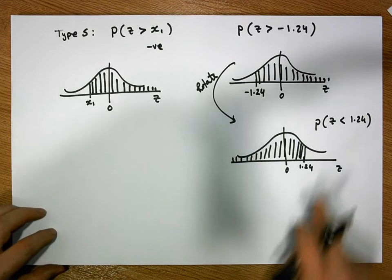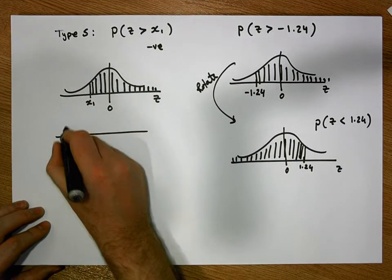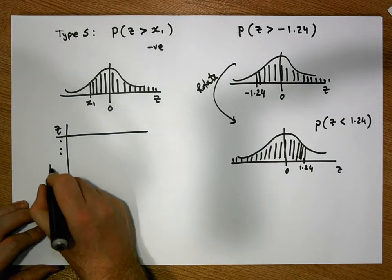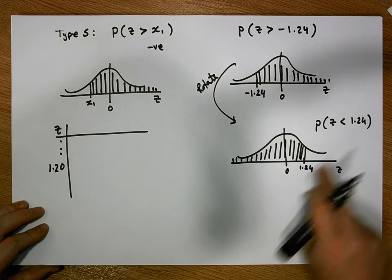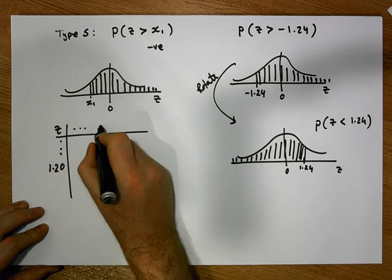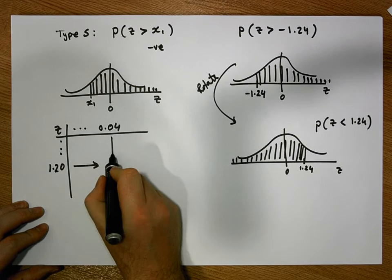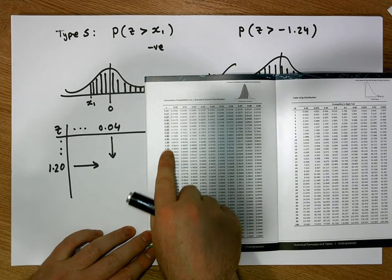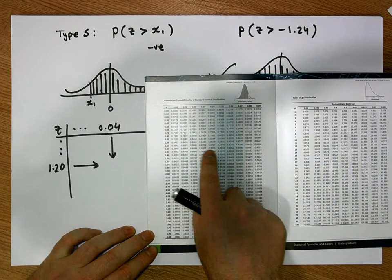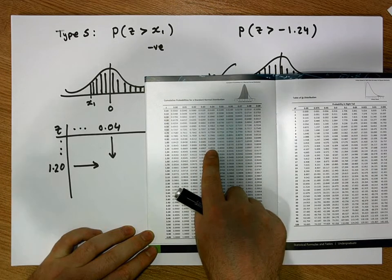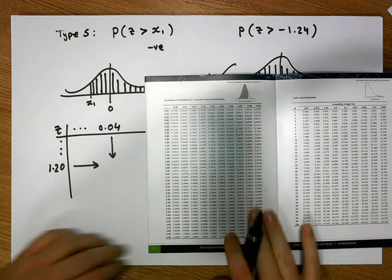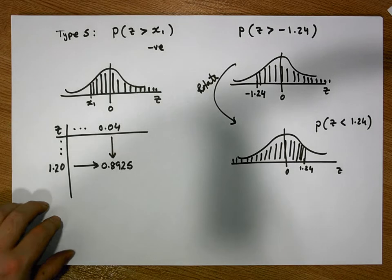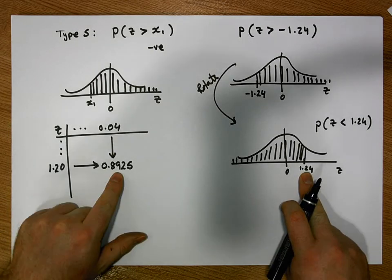We go to our tables and look up 1.24. Coming down the column to the first significant digit and first decimal digit, we go to 1.20. The second decimal digit is 4, so we come across to 0.04. Triangulating these on our tables — coming down to 1.20 and across to the column labelled 0.04 — gives us a value of 0.8925. So looking up 1.24 in our tables, we get 0.8925.